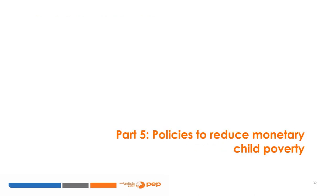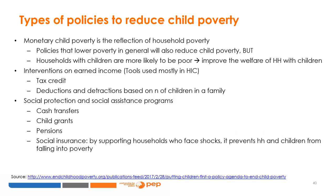Finally, we review some of the policies that can reduce monetary child poverty. Because monetary child poverty reflects general household poverty, policies that lower this will also affect child poverty. However, we have seen that households with children are more likely to be poor, so to reduce child poverty it is crucial to focus on households with children. There are two types of interventions. Policy changes on earned income, which are a tool mostly used in high-income countries, such as tax credits or deductions based on the number of children in a family — though they exclude people who are outside of the formal labor market. The other type is social protection and social assistance programs, providing help such as cash transfers, child grants, pensions, and social insurance.